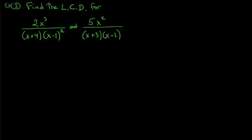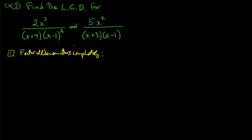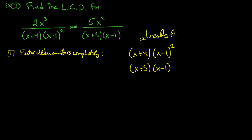Example three: find the LCD for 2x cubed over (x+4)(x−1) squared and 5x squared over (x+3)(x−1). Step one, factor all denominators — luckily they're already factored. We have (x+4)(x−1) squared and (x+3)(x−1).